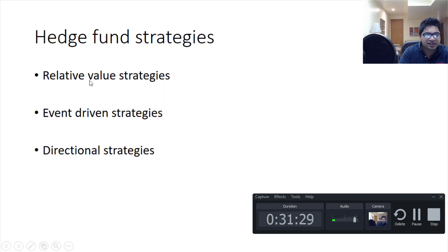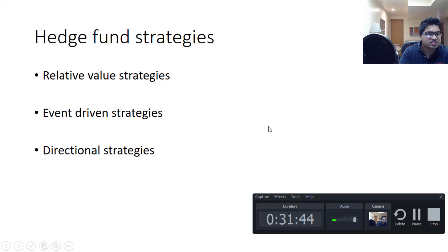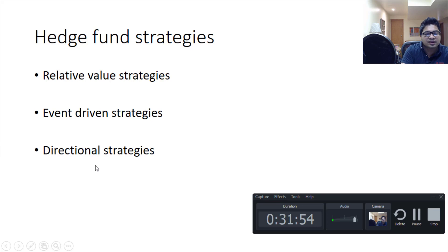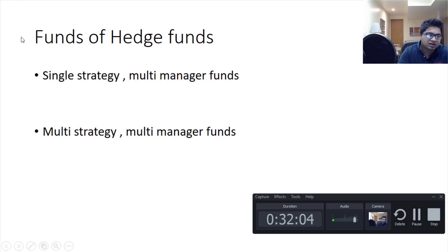Summary of three hedge fund strategies: relative value strategy (arbitrage — buying in one market, selling in another at same value) has very low market risk. Event-driven strategies (based on mergers, acquisitions, etc.) have medium market risk. Directional strategies (going long and short on similar stocks in unequal amounts) have the highest market exposure.